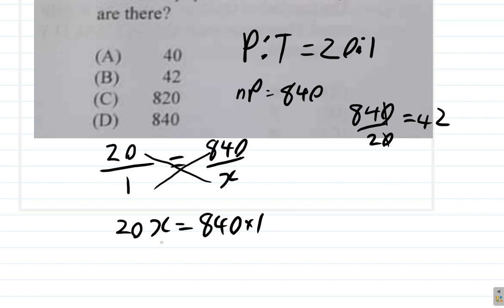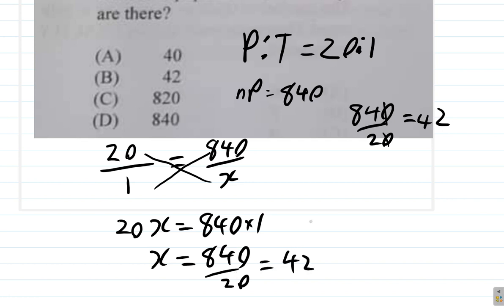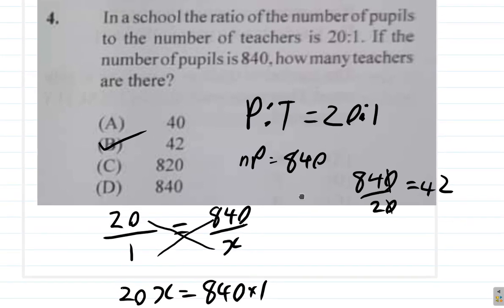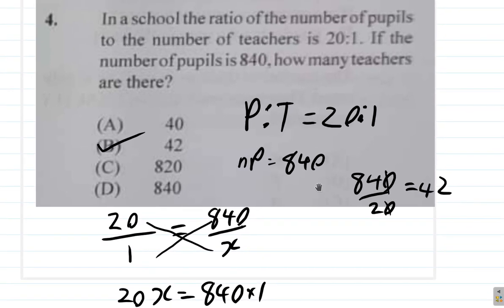So when you divide both sides by 20, X is equal to 840 divided by 20. Again, you get 42. So in any case, the answer to Question 4 is 42.